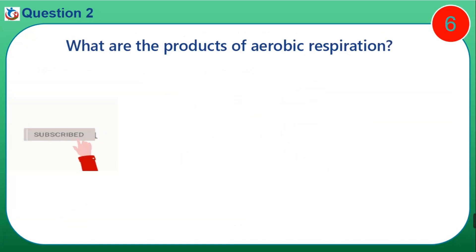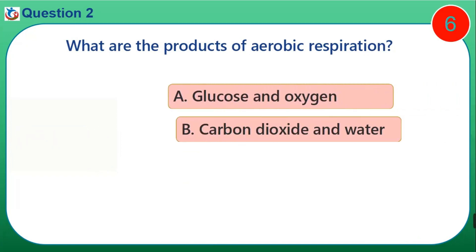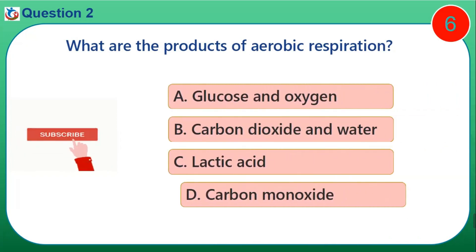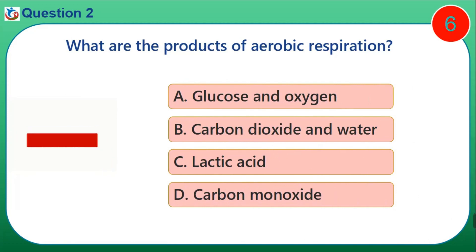Question 2. What are the products of aerobic respiration? A. Glucose and oxygen. B. Carbon dioxide and water. C. Lactic acid. D. Carbon monoxide.